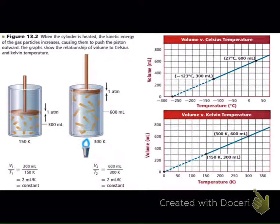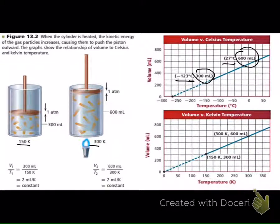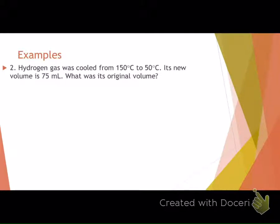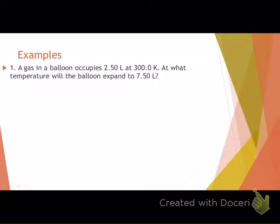A graph shows volume versus temperature in both Celsius and Kelvin, demonstrating a direct proportion — a positive linear slope means if one goes up, the other goes up. As temperature rises, volume increases because particles move faster, allowing the piston to expand. Charles' Law is written as V1/T1 = V2/T2.